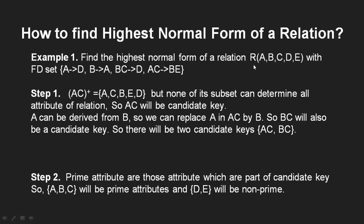We have a relation R with attributes A, B, C, D, E and a given FD set. First we find the candidate keys. The AC closure gives us A, C, then AC determines BE, and BC determines D — so AC closure determines all attributes. However, subsets A-closure gives only AD, and C-closure gives only C, so they cannot determine all other attributes. Therefore AC is a candidate key.